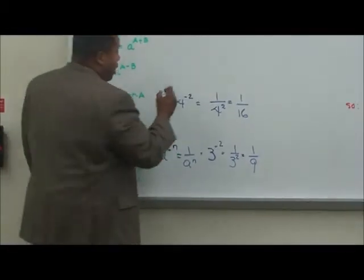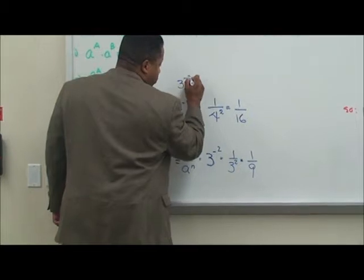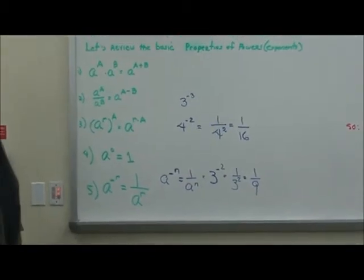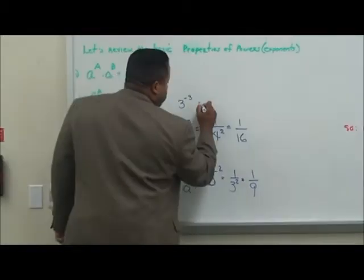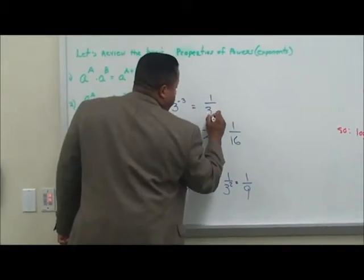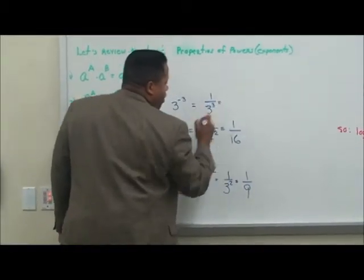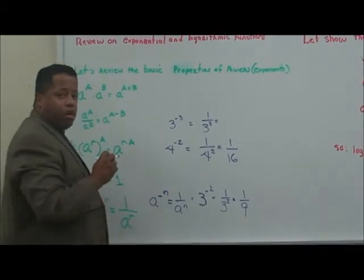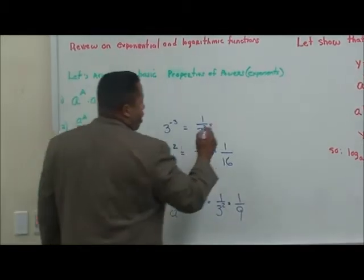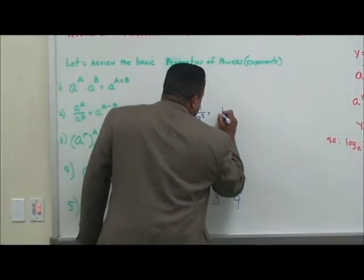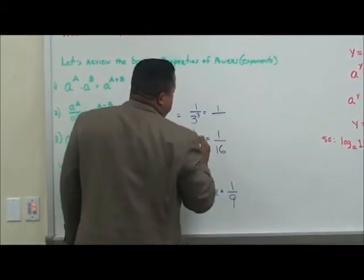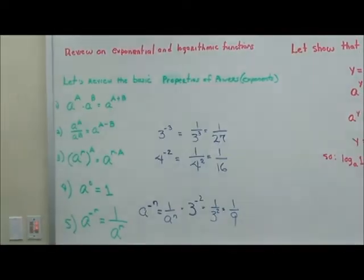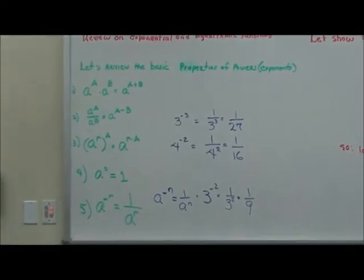One more example: if we had three raised to the negative three power, that's going to be one over three to the third power. Always give the simplified answer — that's going to be one over twenty-seven, because three times three is nine, times three is twenty-seven.